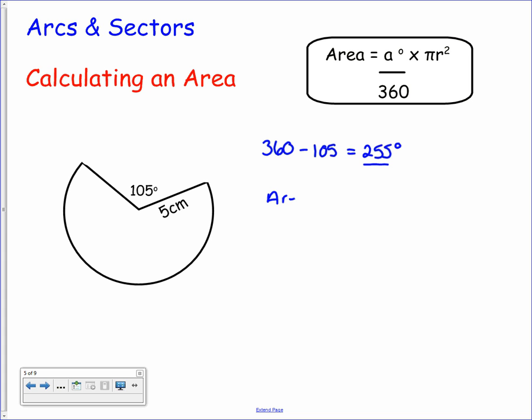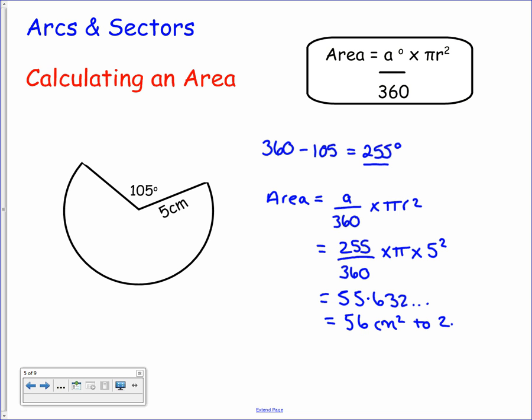Again, substitute into the formula. Your area is a over 360 times pi r squared. So we have 255 divided by 360, multiplied by pi times 5 squared. Doing that calculation you will get 55.632. We need to round this, and since we're talking about an area this time, we need to have a change of units to square centimeters. So we get 56 square centimeters to two significant figures. And that's the area of our sector.